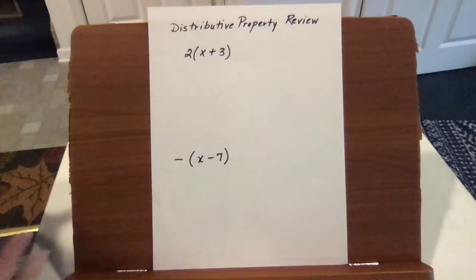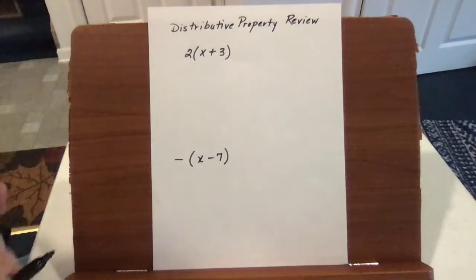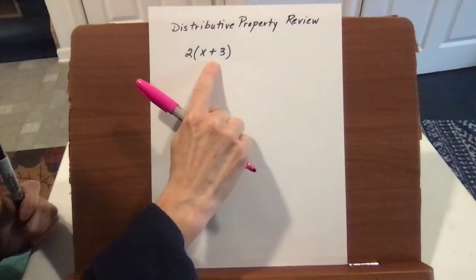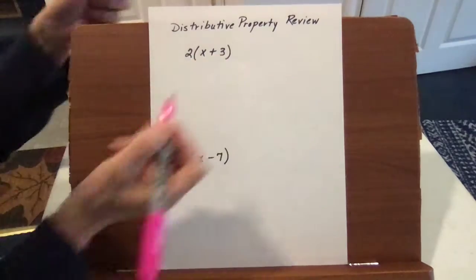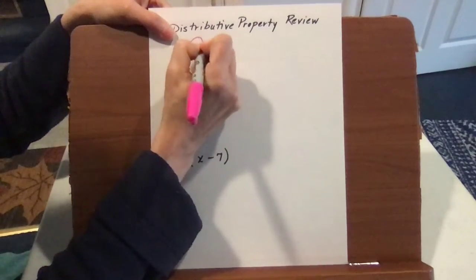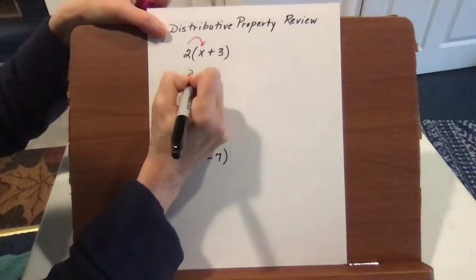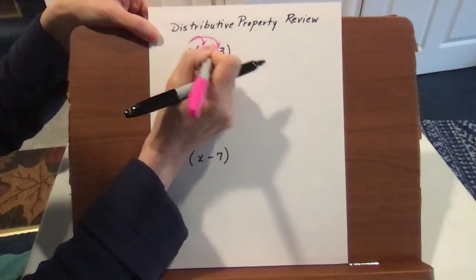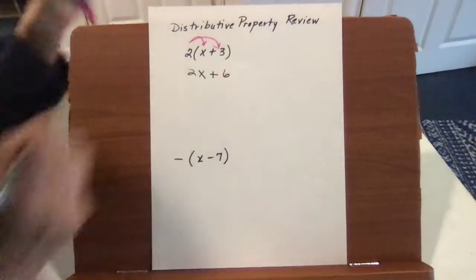We're going to look at solving multi-step equations, and first I want to do a quick review of the distributive property. The distributive property means two times a quantity — in this case x plus three. We would distribute two to x and come up with 2x, and distribute two to three — two times three is six.